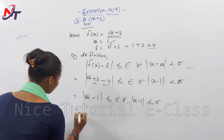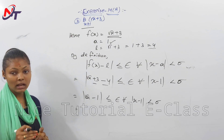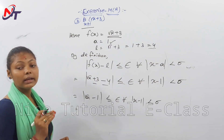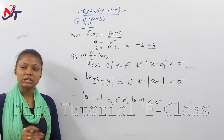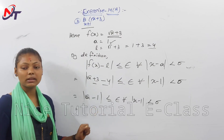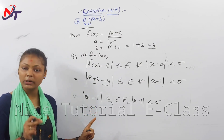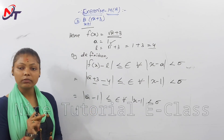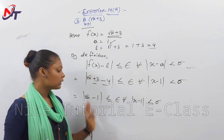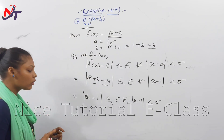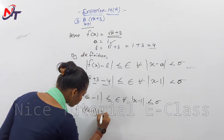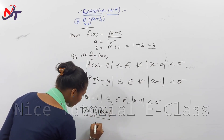Since root x minus 1 is an irrational number, we need to convert it to a rational number. So we will multiply and divide by root x plus 1 — the conjugate — to rationalize the expression. Using the same method, we multiply by root x plus 1 and divide by root x plus 1.